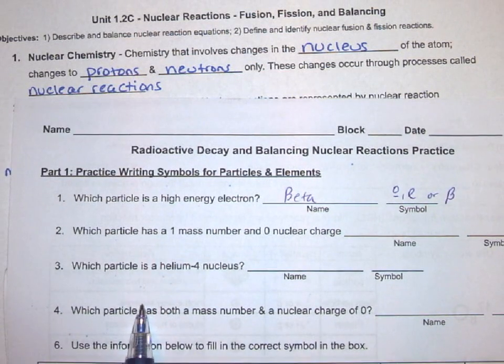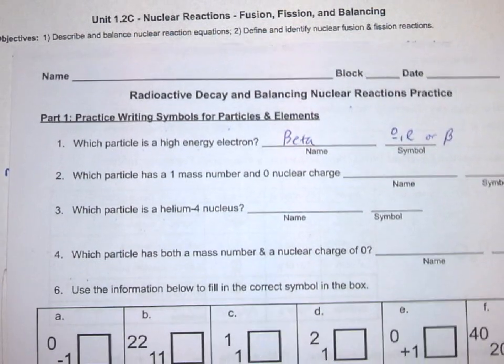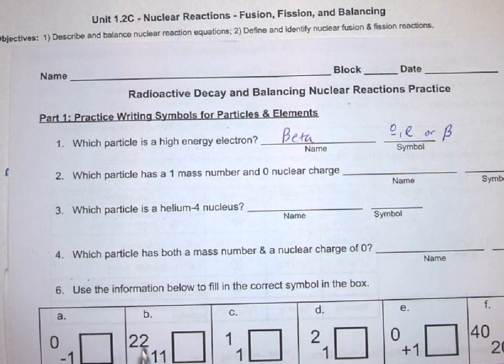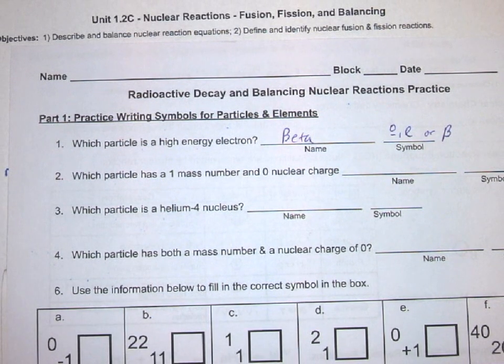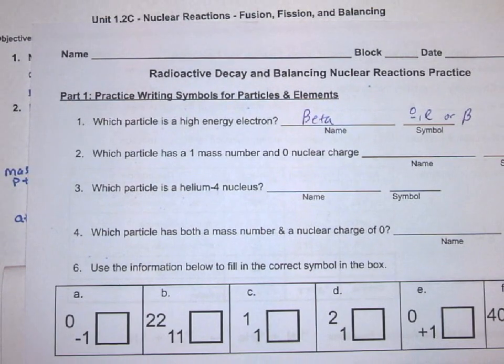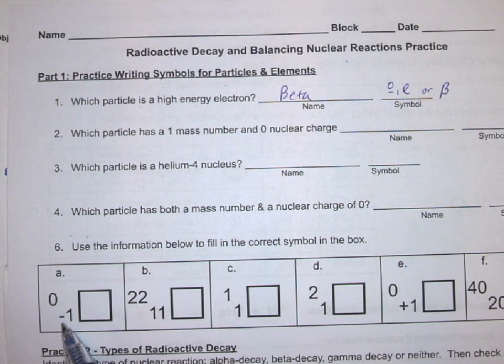Take a moment to complete that, and then we also need to complete the part at the bottom here, which is labeled as question six—it should be five. For these, we're using the numbers to identify the element. There's two places we're going to look: we're either going to look in this table if it's one of the particles, or we're going to look in the periodic table. Let's take a look at the first one.